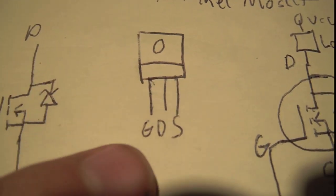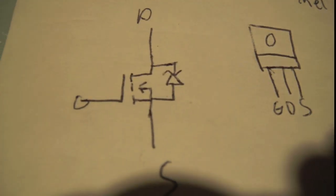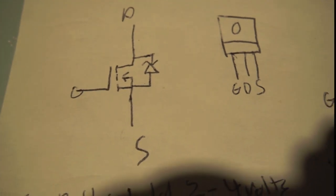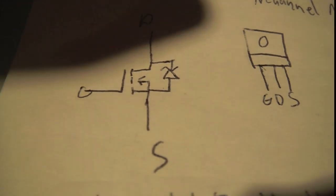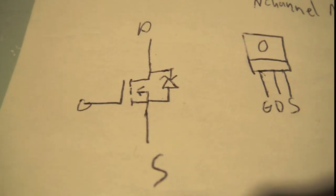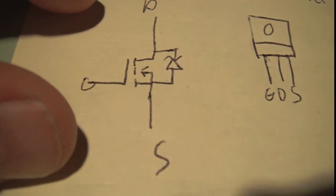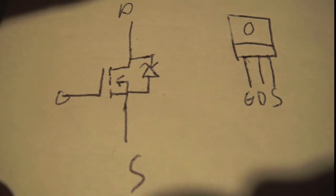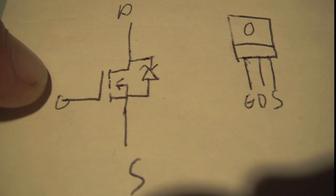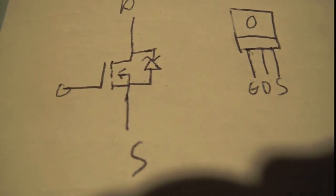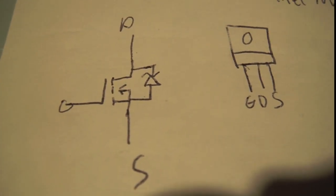If you happen to have an IRF640 MOSFET as well, its pins are the gate, drain, and source. You can think of an N-channel as sort of being the MOSFET equivalent to an NPN transistor. NPN maps to N-channel and PNP maps to P-channel. It works the same as a bipolar junction transistor in that a signal on the gate will make a connection between the drain and the source.